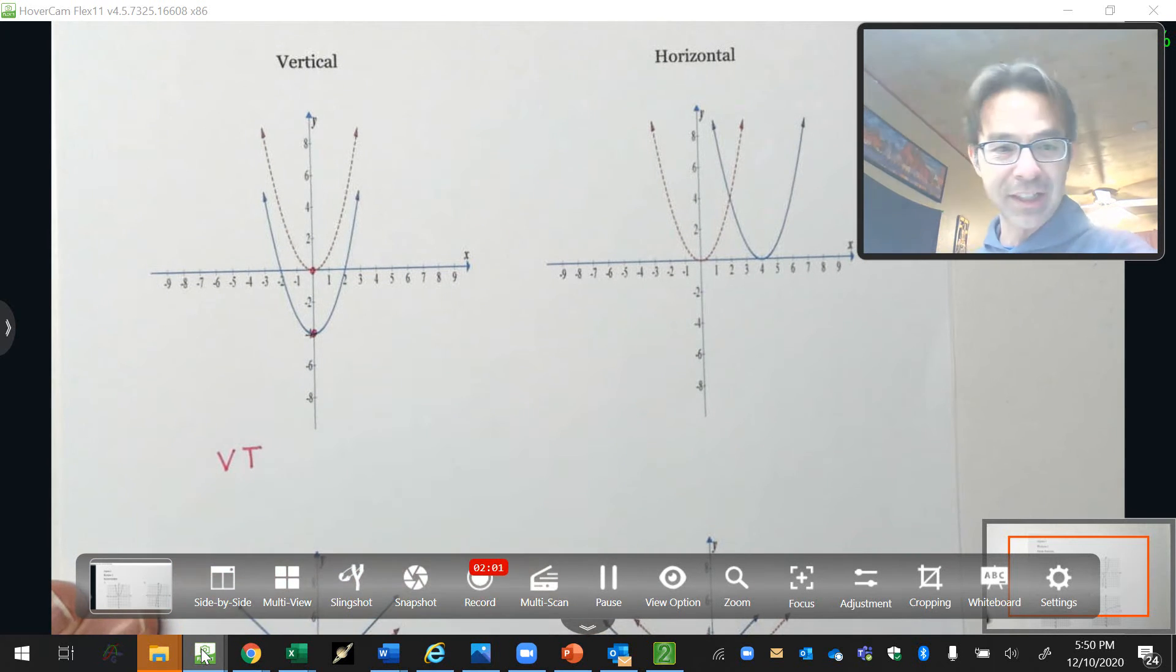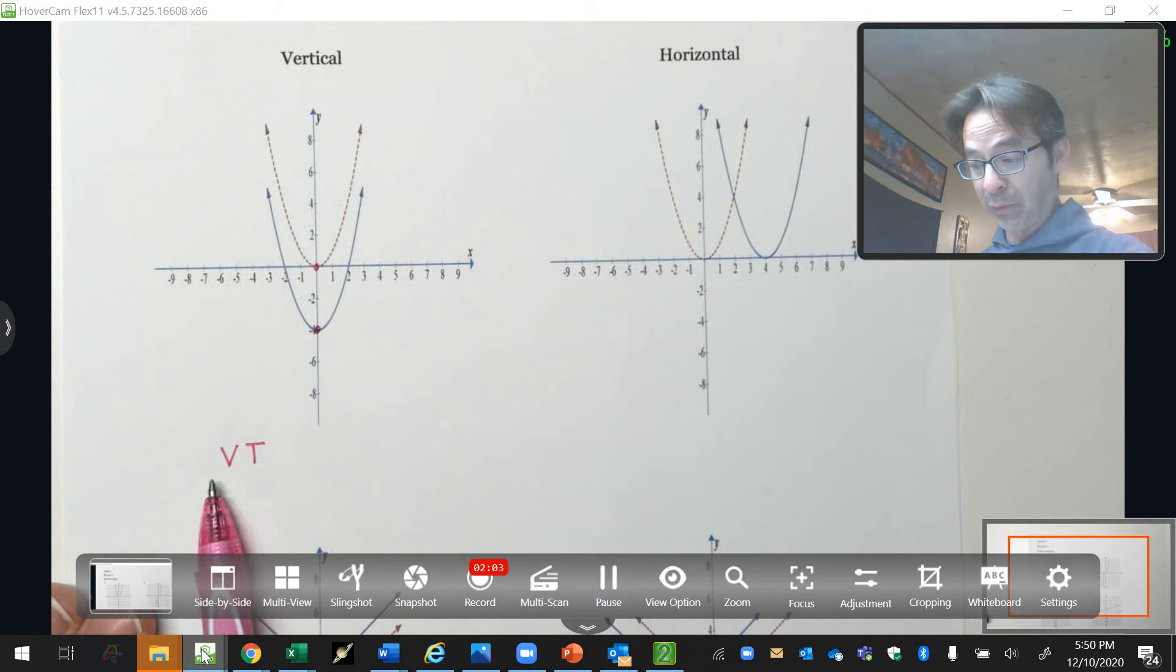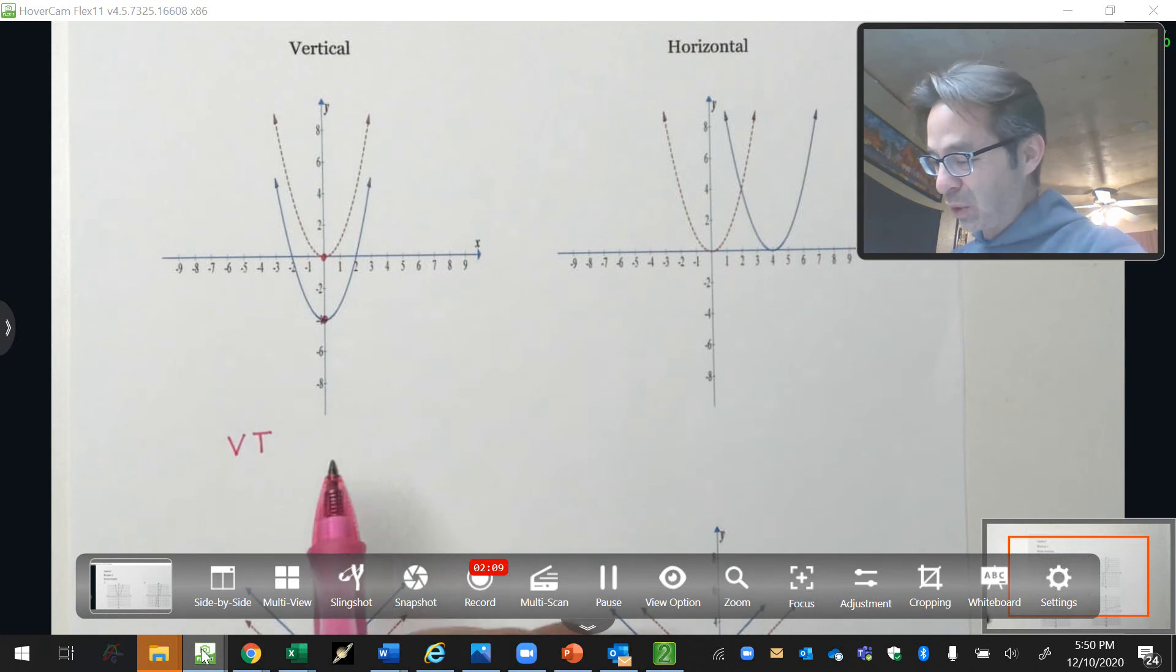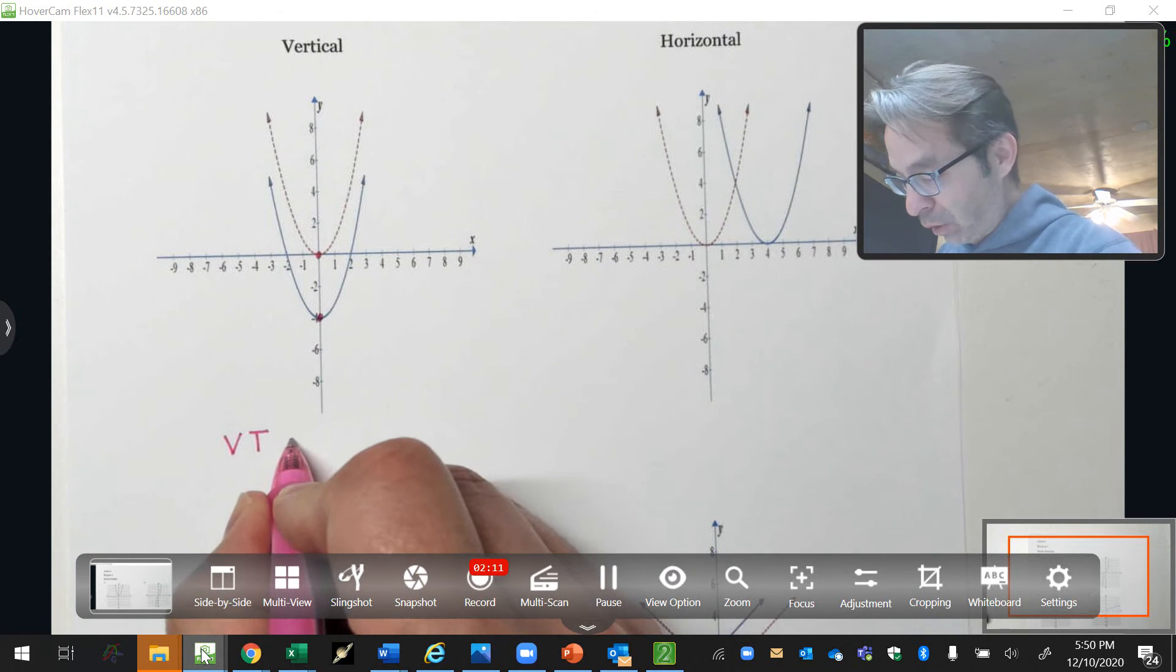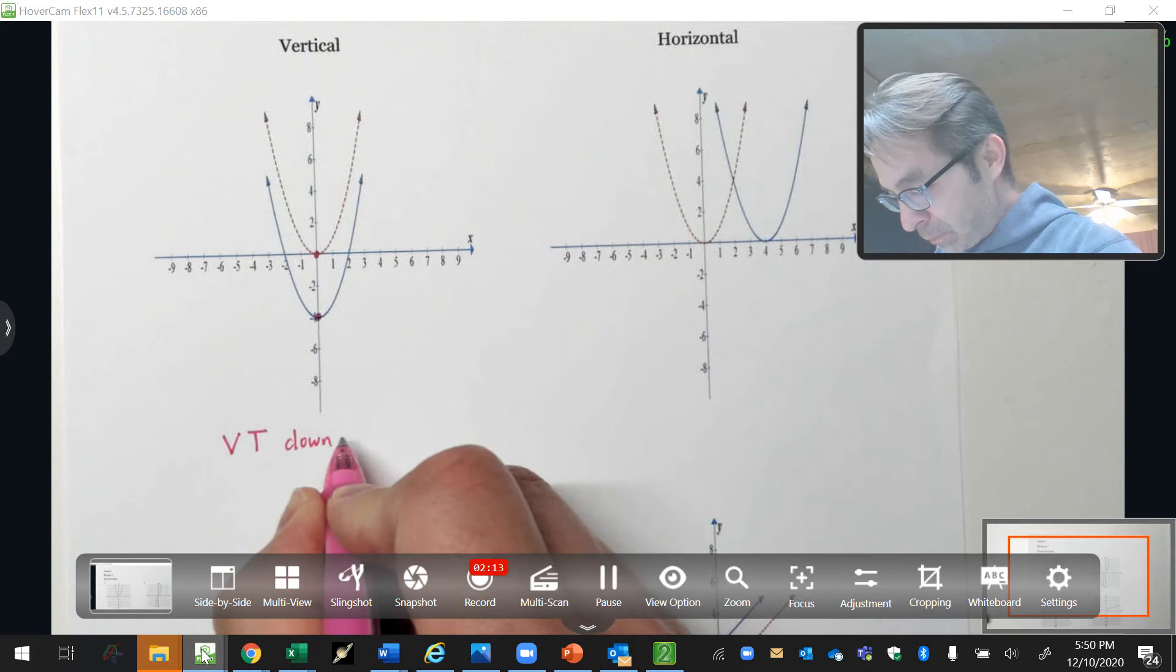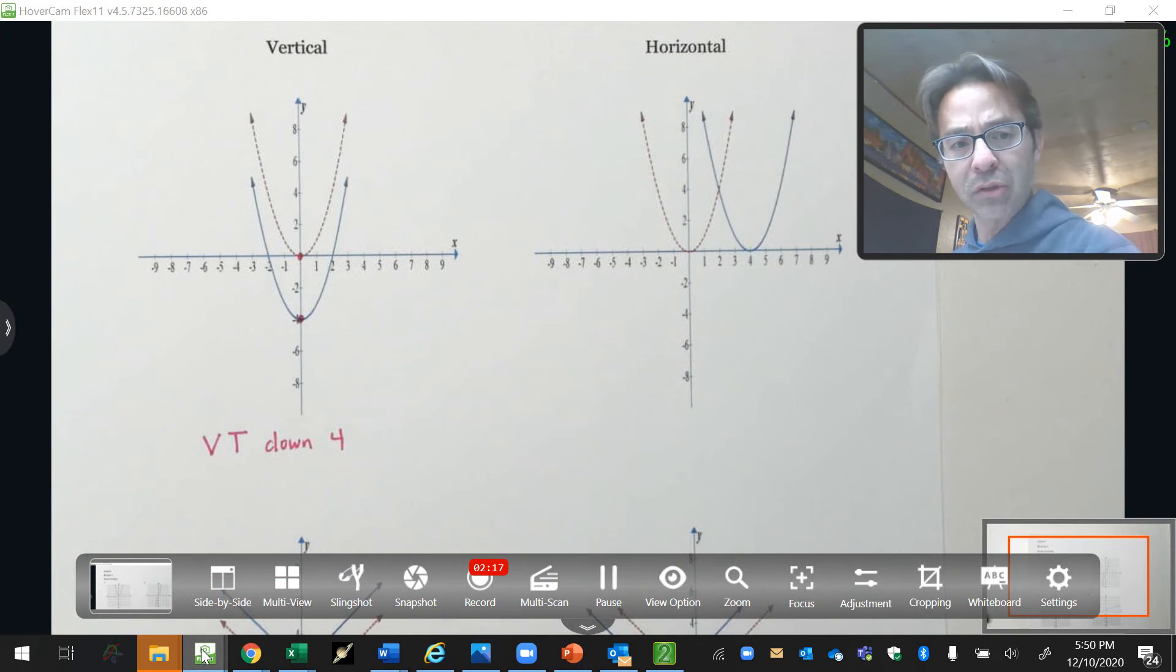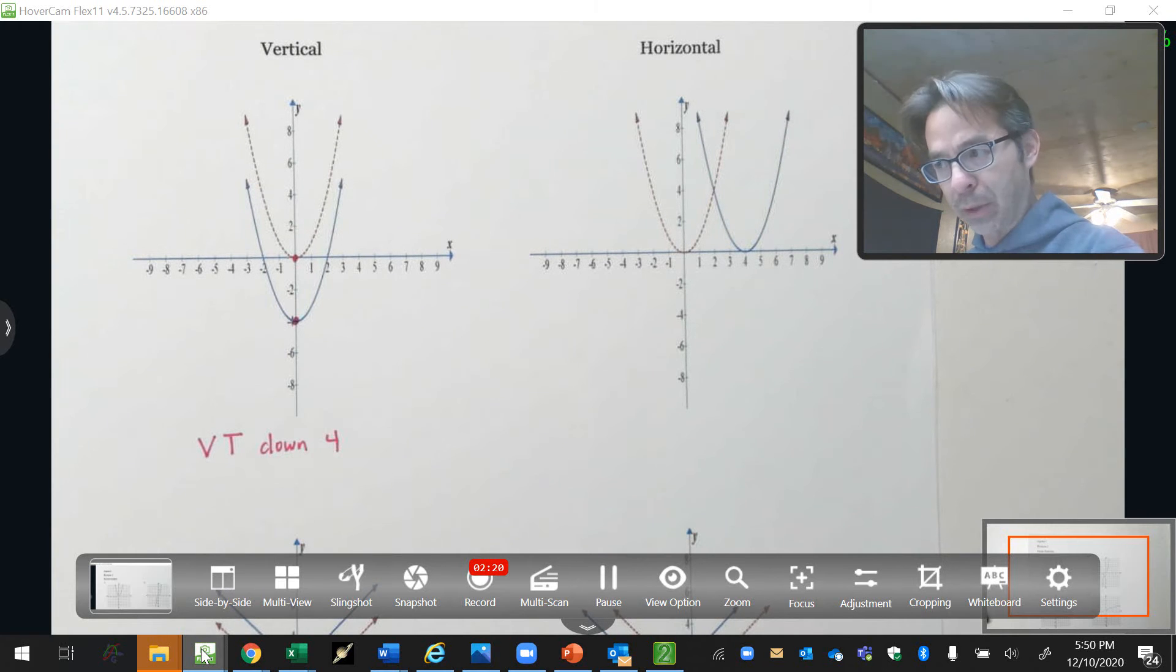Vertical translation. I am super lazy. If you want to be super lazy and write vertical translation like that, abbreviate it, I'm perfectly okay with that. Vertical translation down four. You guys did really good describing. The hard part is the equation part.